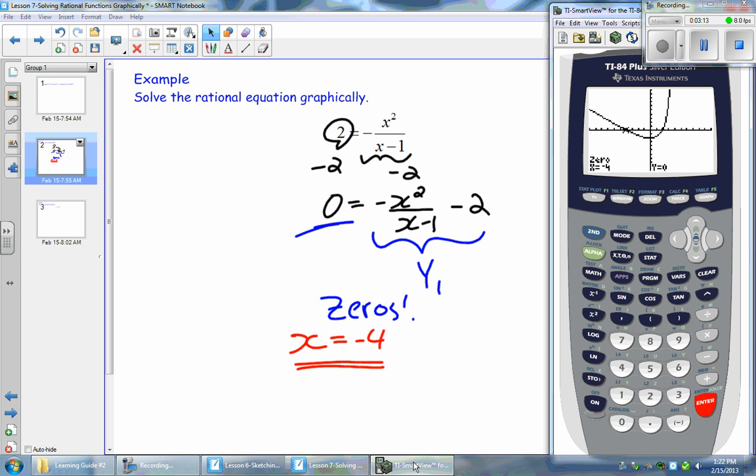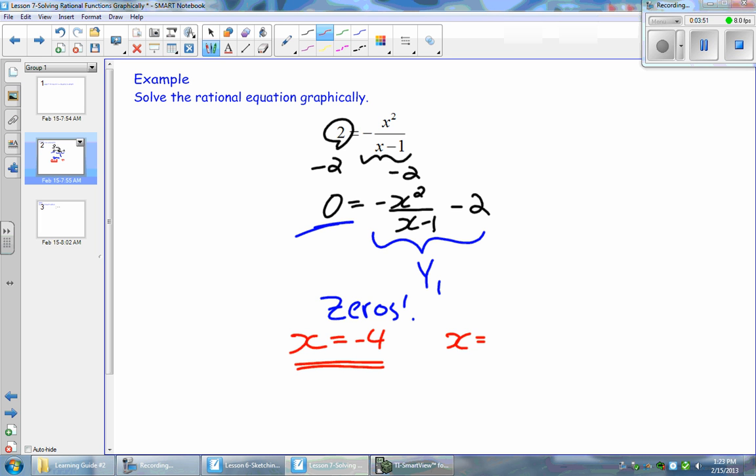Now we want to find the second point of intersection, which is right here. So using the 0 feature, we're going to find that point of intersection. So go 2nd trace, select 2 for 0. And you're going to get on the left of that point, right about there. And then press Enter. And it's going to ask you for a right bound. So get above the x-intercept, about there is good. And then press Enter to guess. And you're going to get a 0 at positive 2. So there is the second solution, also the last solution. And that's how you solve a rational equation using a graph.